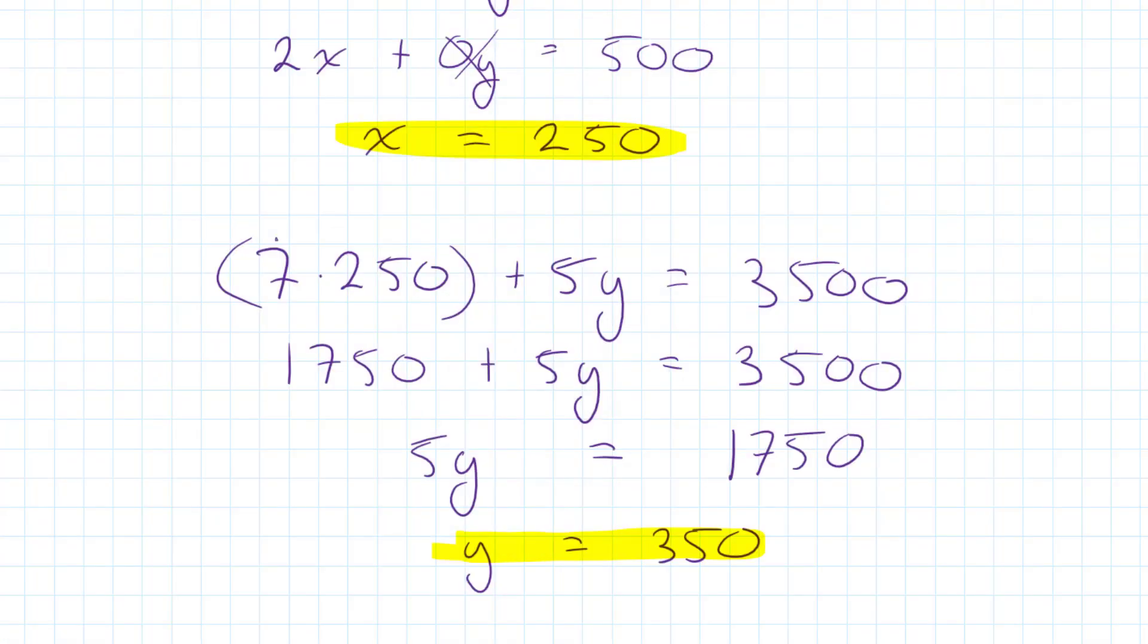Ladies and gentlemen, that's how we can use simultaneous equations to solve for two unknowns when we are given two equations. With that knowledge, we can now move into paper PM and we can solve a variety of problems. For example, we can find a profit maximizing production plan when we are given a list of constraints. For example, a shortage of materials and a shortage of labor.